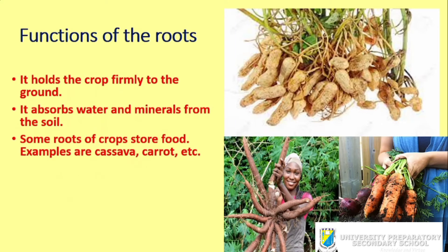Some roots of crops store food. For instance, carrot and cassava store food as sugar through the process called photosynthesis. In the course of this class I will briefly explain photosynthesis — I'm sure you have heard the word before, but I still need to elaborate more on it for proper understanding.